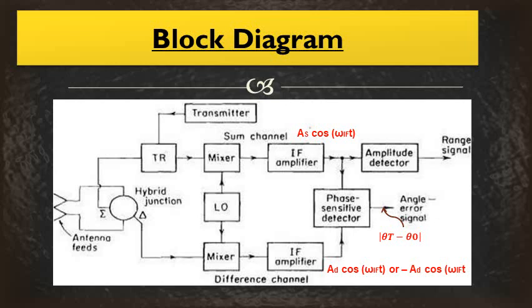Looking at the diagram, we have two antenna feed horns connected with a certain separation between them to generate the squinted beams. There is a hybrid junction — maybe a magic T, circulator, or similar device — which has two input ports and two output ports. The two output ports give us a sum and a difference. The sum signal and the difference signal are generated this way. The transmitter gives a signal to the hybrid junction; signals are sent to the antenna feed horns and transmitted.